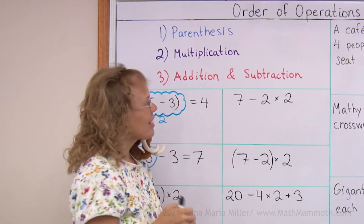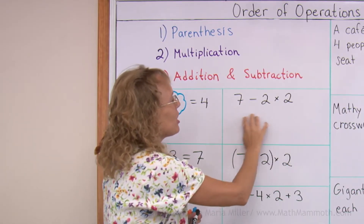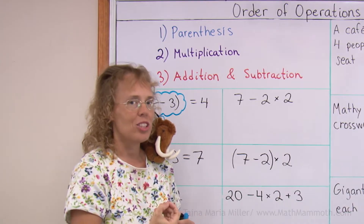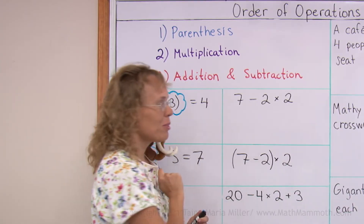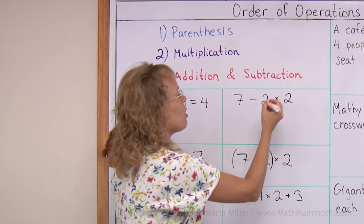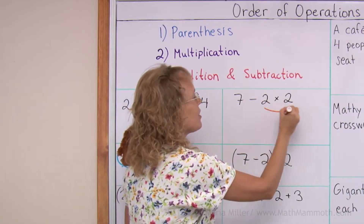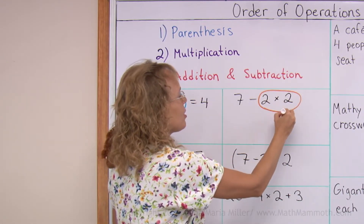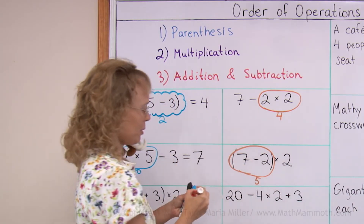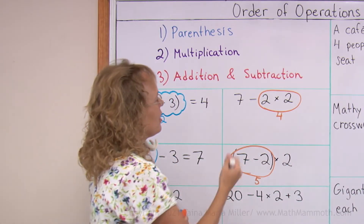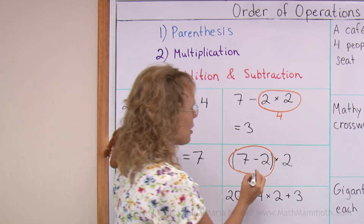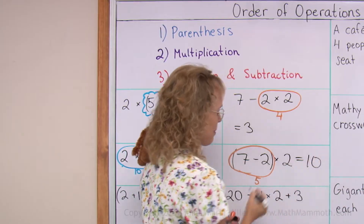In fact, if you have a situation where you want or need to do the subtraction before multiplication, then you have to use parentheses when you're writing it out. So over here this gets done first, but over here this gets done first. We get 7 minus 4 equals 3, and here we get 5 times 2 equals 10.